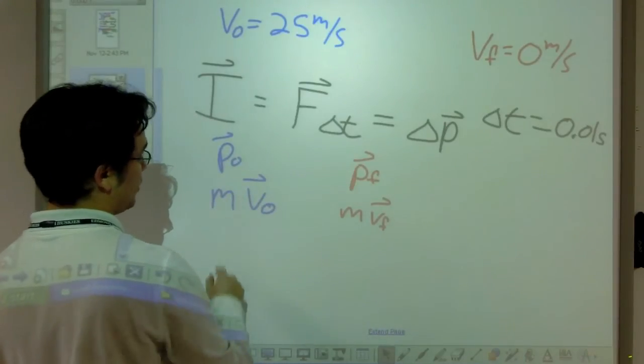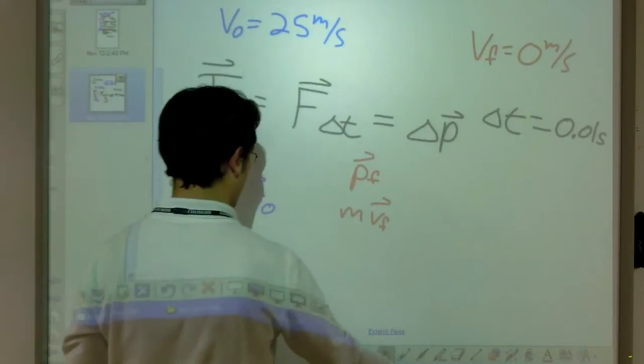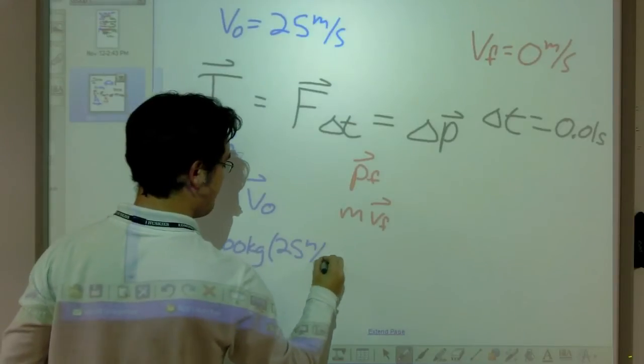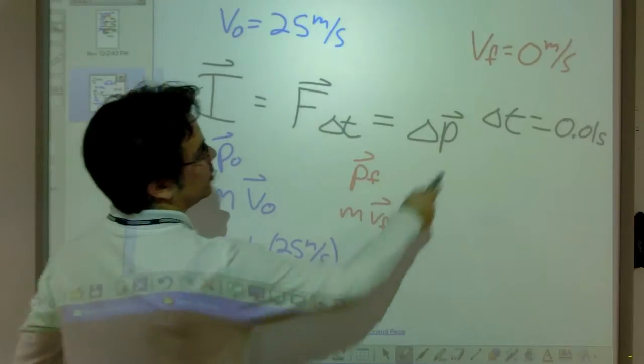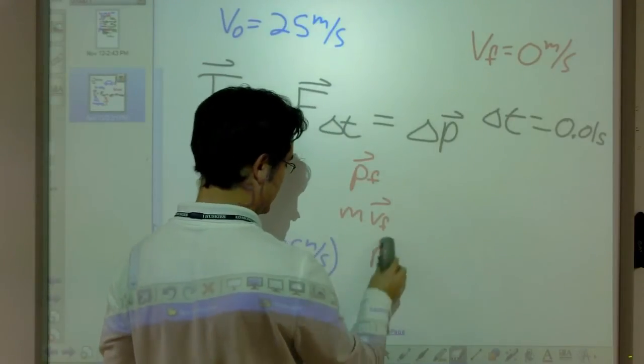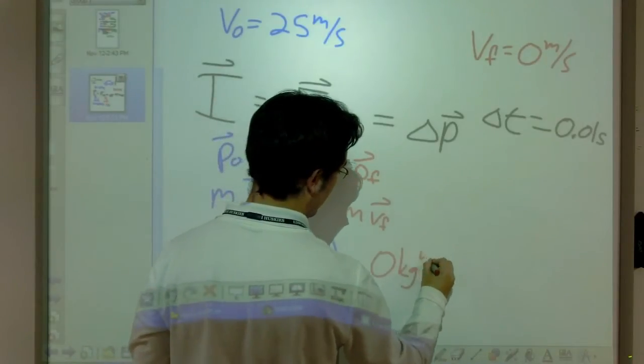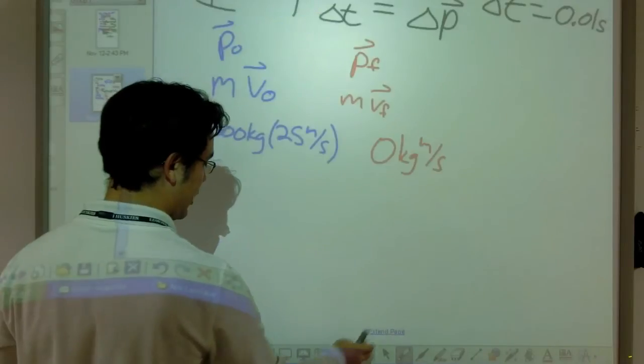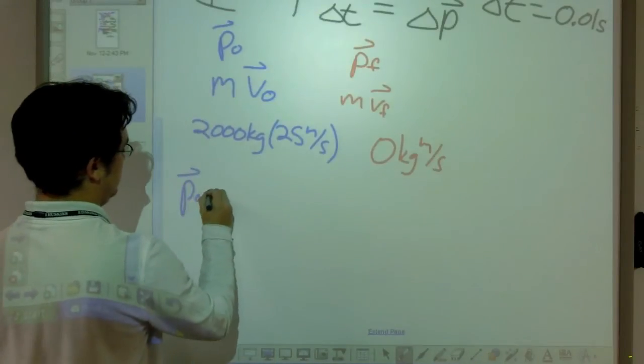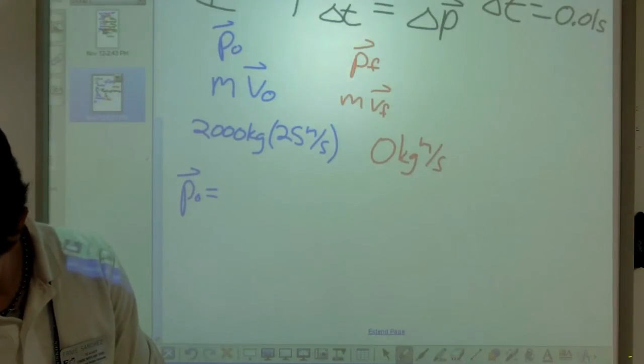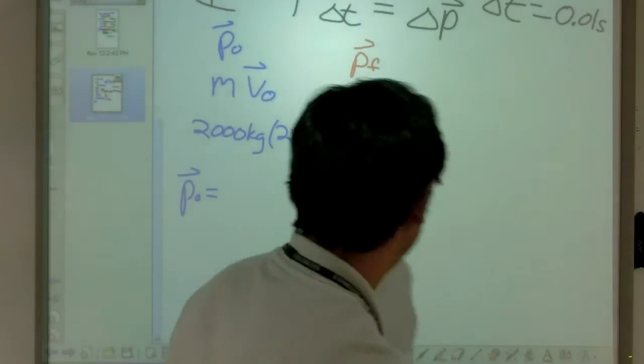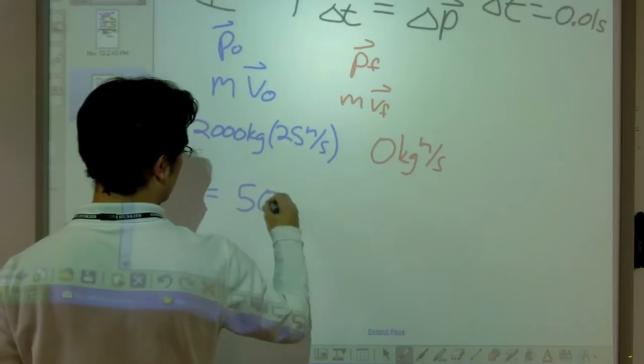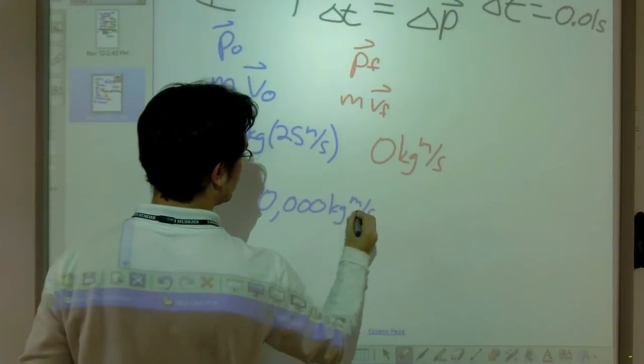Well, when I plug the values in, I've got the mass of the car, which is 2,000 kilograms. So, I've got 2,000 kilograms times my initial velocity is 25 meters per second. And my final velocity is going to be 0 meters per second. So, I know that my momentum in this case is going to be 0 kilogram meter per second, or newton seconds. I'm more of a fan of kilogram meter per second. So, when I multiply this out, I know that my initial momentum equals 50,000 kilogram meter per second. And that is going to be to the right.